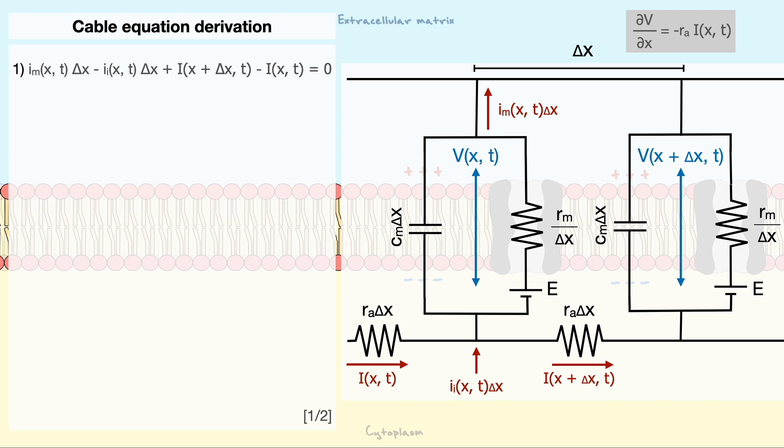remember that our convention says that positive charges moving out of the cell is positive current. And in the horizontal plane, we will assume that the right is positive.